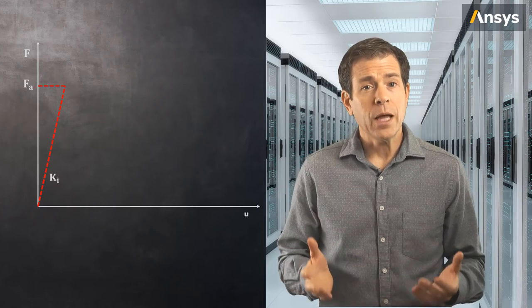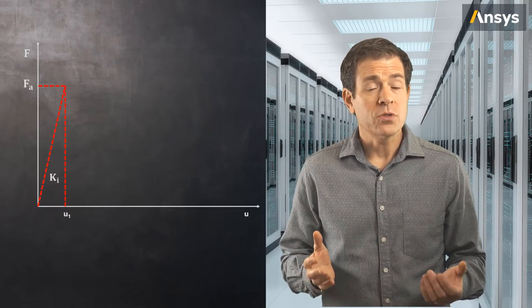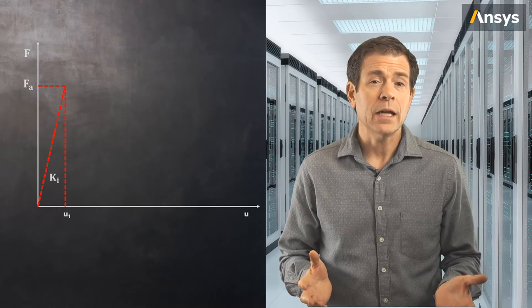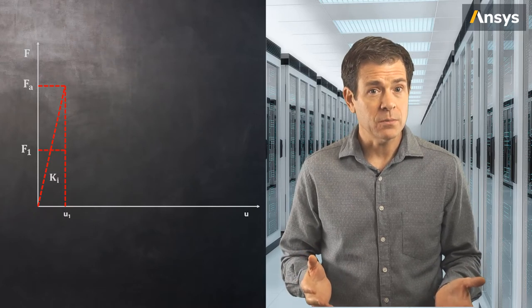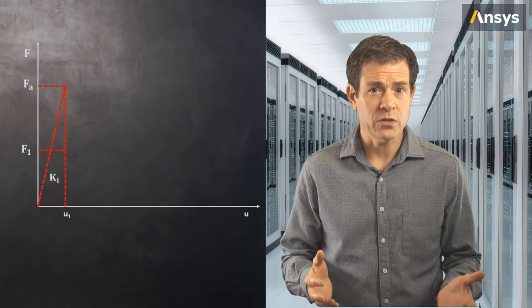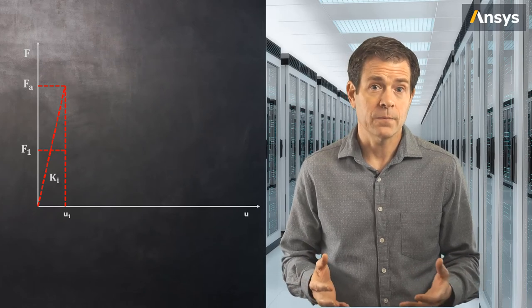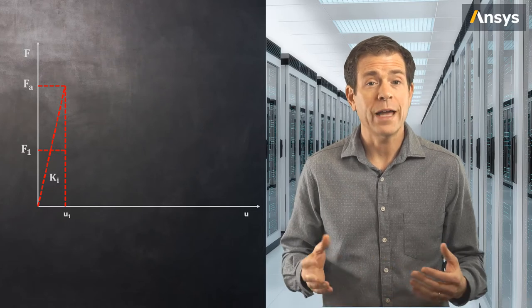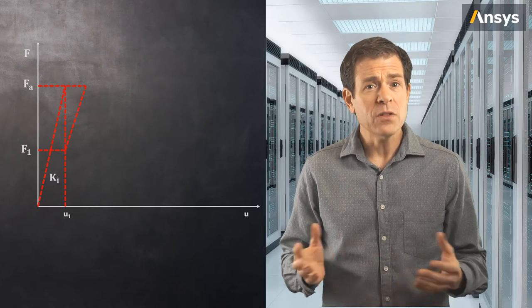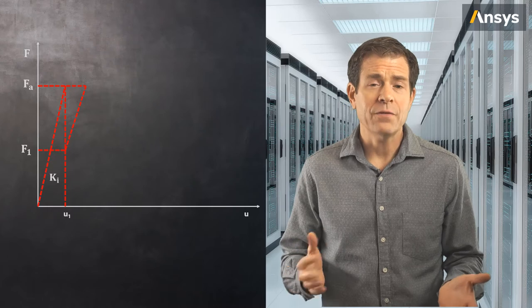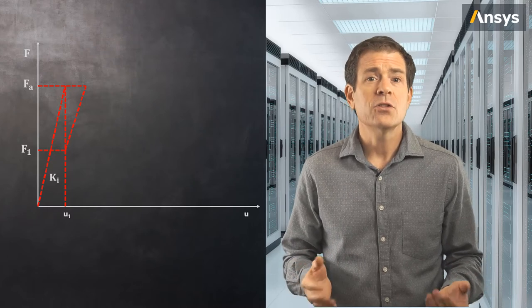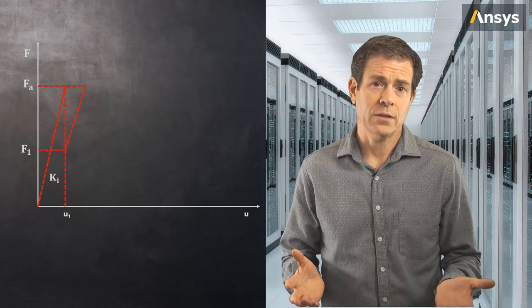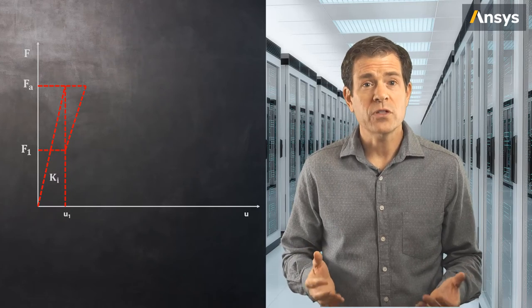For the applied load F sub a, the resultant displacement is now calculated as u1. Now impose this displacement to the system and calculate the sum of all the internal forces generated in the system and the elements, called F sub 1. If the system is in equilibrium then F sub a equals F sub 1, but clearly that's not the case here, so the calculated displacement is incorrect. This is called the first iteration.